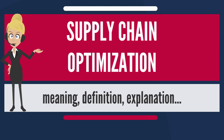Supply chain optimization addresses the general supply chain problem of delivering products to customers at the lowest total cost and highest profit. This includes trading off the costs of inventory, transportation, distributing and manufacturing. In addition, optimizing storage and transportation costs by means of product package size.